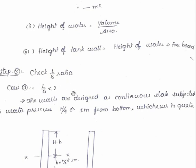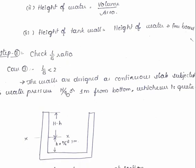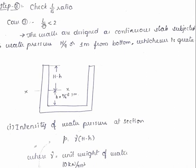Step 3 checking L by B ratio. First case, let us assume if L by B ratio is less than 2, then what happens? The tank walls are designed as continuous slab subjected to water pressure H/4 or 1 meter from the bottom, whichever is greater. In the previous video I have mentioned that as it is an approximate method, not absolute method, we are assuming the maximum intensity of water pressure acts at this point.